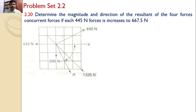This is the given diagram. There are four forces. One force is 819 Newtons acting downwards. Another force is 1335 Newtons acting inclined. Another force acts towards the left side — this is not 445 Newtons but 667.5 Newtons. And the last force is also an inclined force, also increased to 667.5 Newtons.